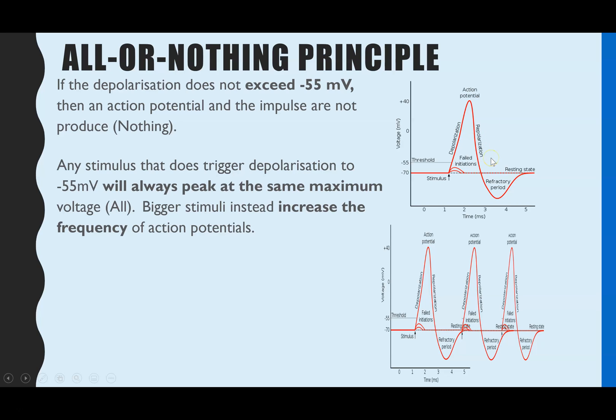So instead, the bigger the stimuli, you don't get a larger peak, you get a higher frequency of action potentials. So those action potentials will be firing more quickly along the axon. So that's what we mean by the all or nothing principle.